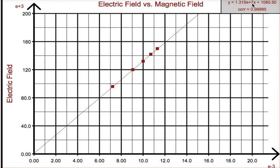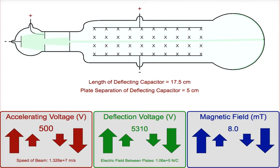They'll find the slope of their graph. And what we want them to realize is that the slope of that graph will turn out to be the speed of the particles in this beam.